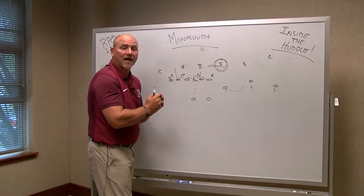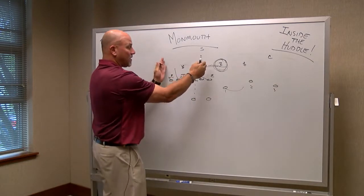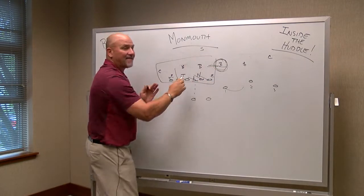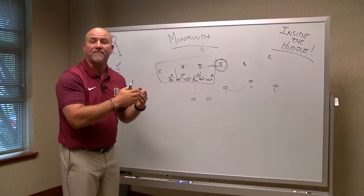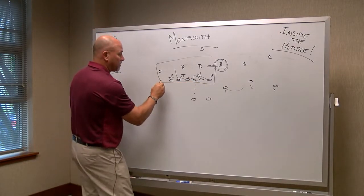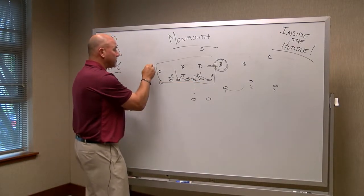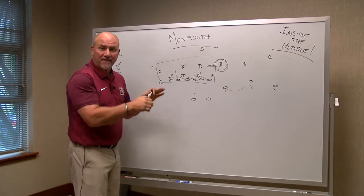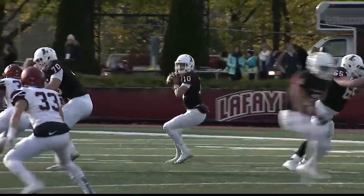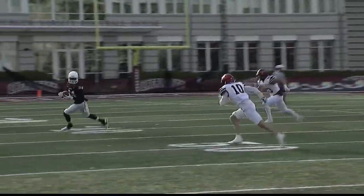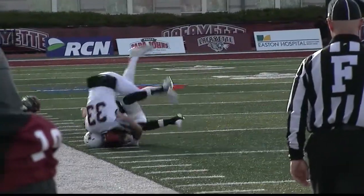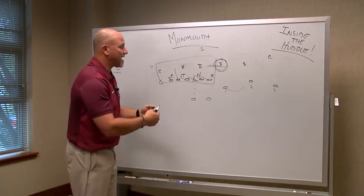As Sean or Cole come to the line of scrimmage, they want to take a look: how many guys are in the box? If the number outweighs the number of blockers — in other words, six blockers versus seven defenders — basically you're going to throw the football. So we're kind of calling two plays in the huddle, or putting two combination plays together.